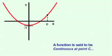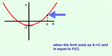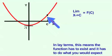A function is said to be continuous at point c when the limit exists as x goes to c and is equal to f of c. In simpler terms, this means that the function has to exist at point c and do what you would expect it to.